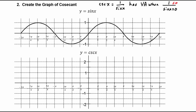We can see there are roots for sine of x at negative two pi, negative pi, zero, pi, and two pi. So those will translate into vertical asymptotes on the graph of cosecant of x at negative two pi, negative pi, zero, pi, and two pi.